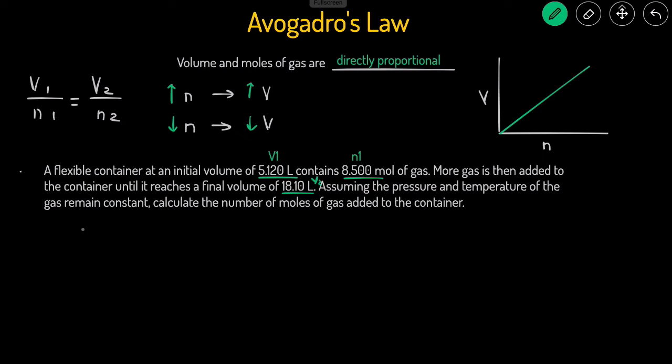Let's set up the equation. V1, 5.12 liters, N1, original number of moles, 8.5 moles, equals to V2, 18.1 liters. And then we don't know what N2 is.